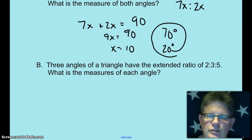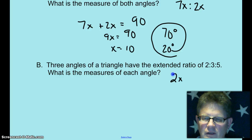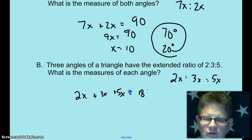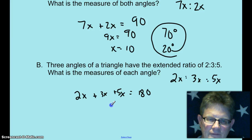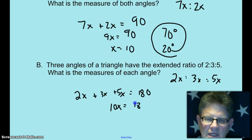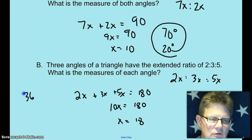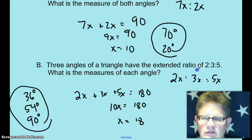Extended ratio of 2 to 3 to 5. I want you in your brain to think 2x to 3x to 5x. So, 3 angles of a triangle: 2x plus 3x plus 5x equals 180 because that's the sum of the three angles of a triangle. 10x equals 180, x equals 18. So that makes the three angles of the triangle 36 degrees, 54 degrees, and 90 degrees. When you see an extended ratio, you should be thinking 2x to 3x to 5x.